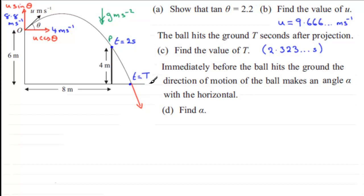Now, the angle that we're being asked to find, the angle between the direction of motion and the horizontal has to be this angle here. This is our angle alpha.